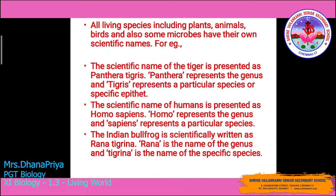All living species — including plants, animals, birds, and microbes — have their own scientific name. For example, the scientific name of the tiger is Panthera tigris, where 'Panthera' represents the genus and 'tigris' represents the species. The scientific name of humans is Homo sapiens, and the Indian bullfrog is written as Rana tigrina, where 'Rana' is the genus and 'tigrina' is the species.